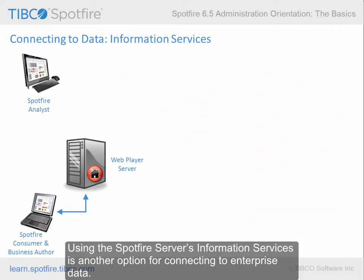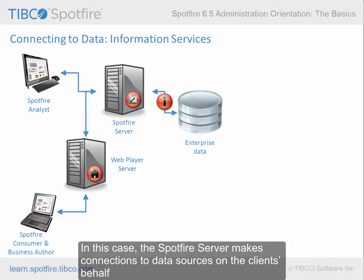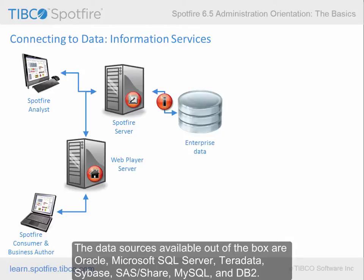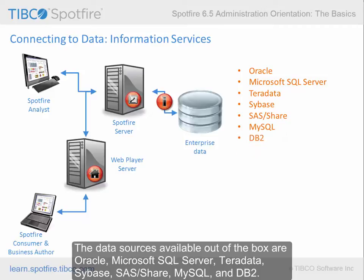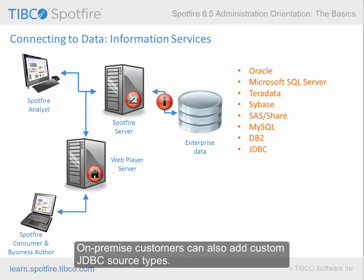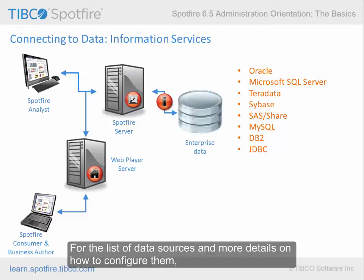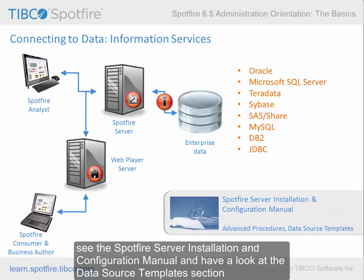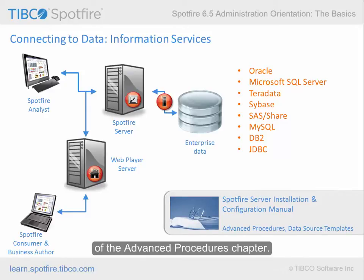Using the Spotfire server's information services is another option for connecting to enterprise data. In this case, the Spotfire server makes connections to data sources on the client's behalf using information links saved in the Spotfire library. The raw data sets are loaded into the server's memory. The data sources available out of the box are Oracle, Microsoft SQL Server, Teradata, Sybase, SAS Share, MySQL, and DB2. On-premise customers can also add custom JDBC source types. For the list of data sources and more details on how to configure them, see the Spotfire server installation and configuration manual and have a look at the Data Source Templates section of the Advanced Procedures chapter.